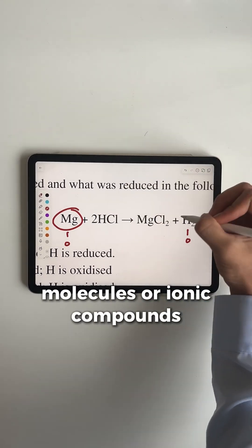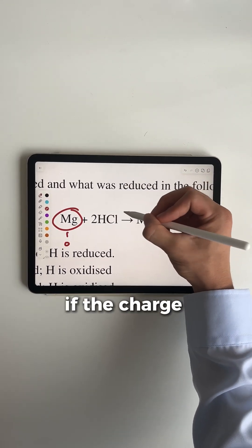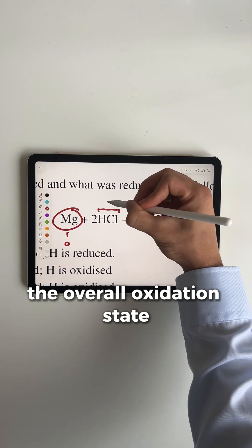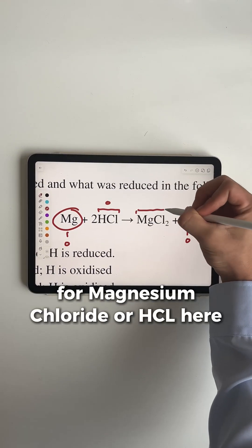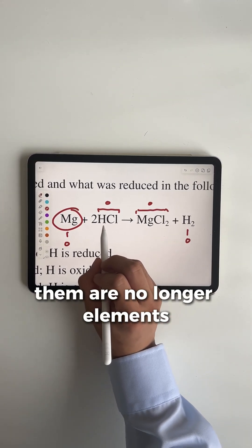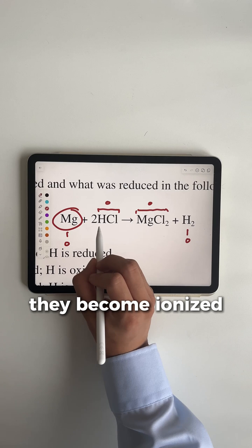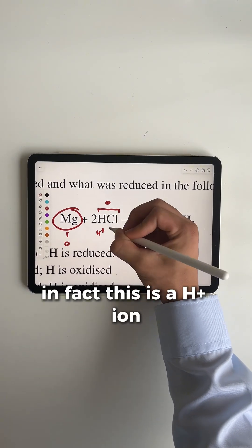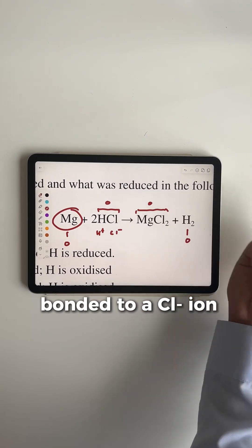Now for when you have molecules or ionic compounds, if the charge of these is also zero, the overall oxidation state for magnesium chloride or HCl here would both be overall zero. However, the elements within them are no longer elements; they've become ionized. So in fact, this is an H+ ion bonded to a Cl- ion.